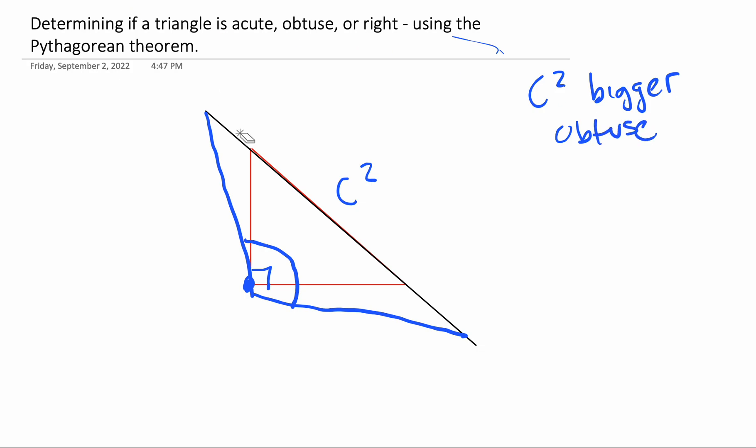And the opposite is going to be true. So let's pretend we are going to make our hypotenuse smaller. So just make it this big. What's going to happen there, you can probably guess, is we're going to have, all of a sudden, an acute angle. So this green angle here is suddenly acute. So if c squared is smaller, we're going to have acute.